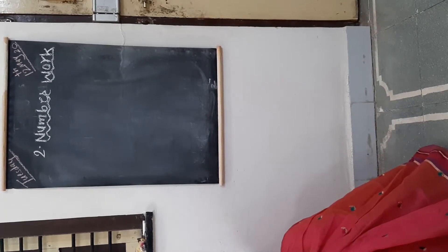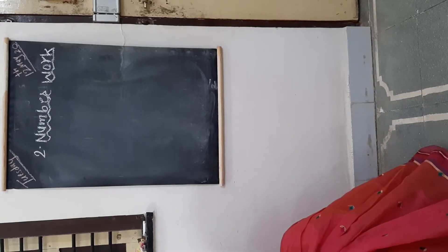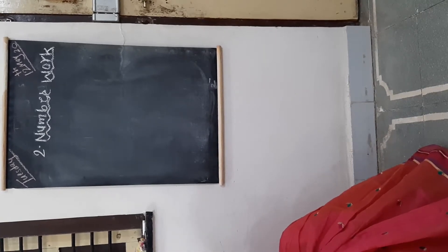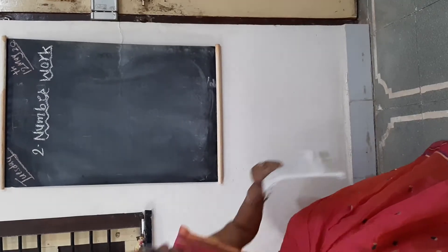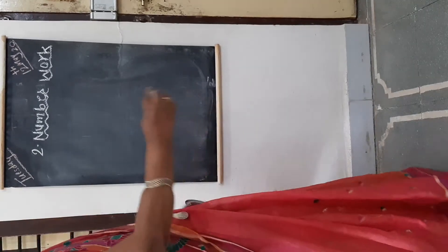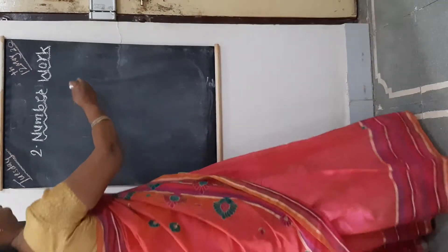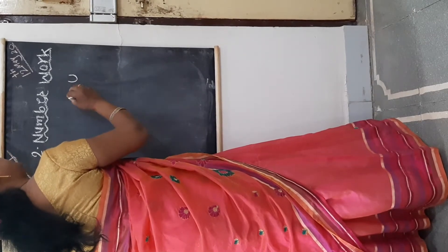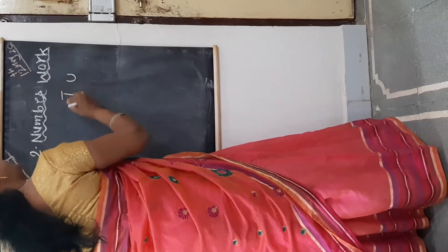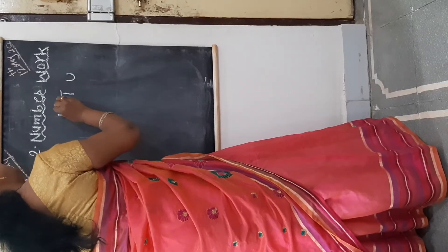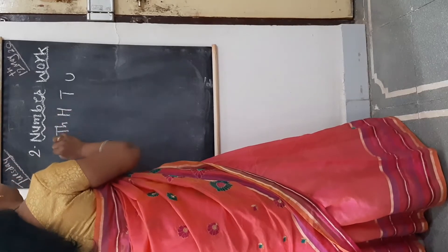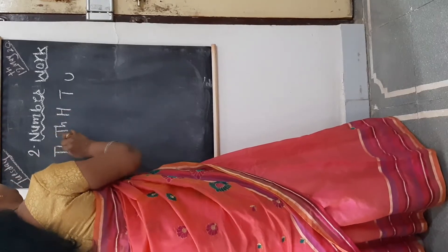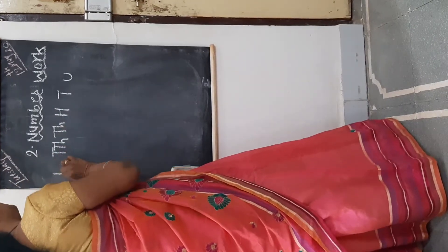Now see the first example: 1,35,855. This is a lakh place number with 6 places. First, write down the names of the places you need: 10, 100, 1000, 10,000, and lakh.